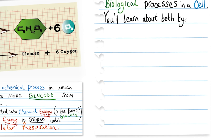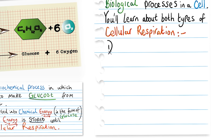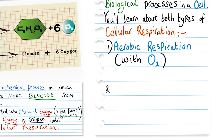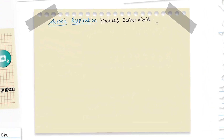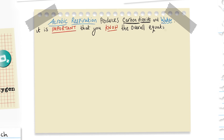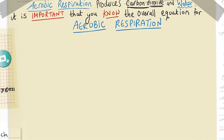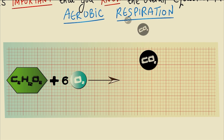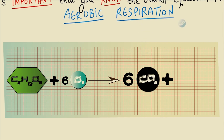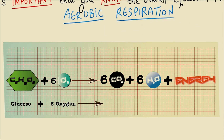You'll learn about both types of cellular respiration. Number one: aerobic respiration, which is respiration with oxygen. Number two: anaerobic respiration, which is respiration without oxygen. You'll learn that aerobic respiration produces carbon dioxide and water. And it is important that you know the overall equation for aerobic respiration: glucose plus six oxygen molecules gives us six carbon dioxide molecules, six molecules of water, and the energy which is released.